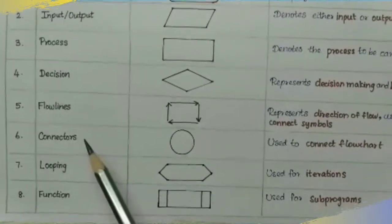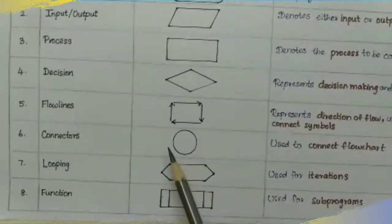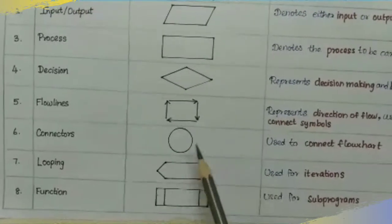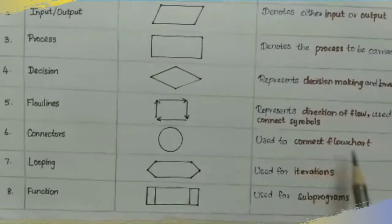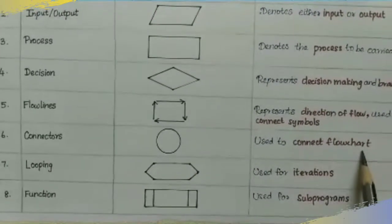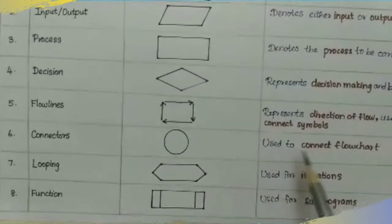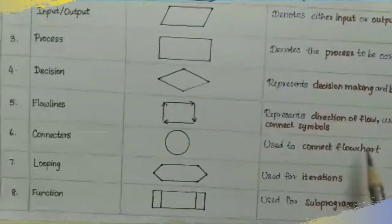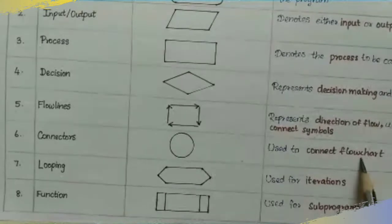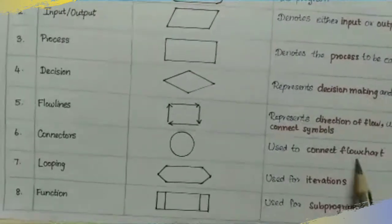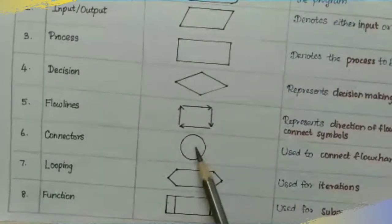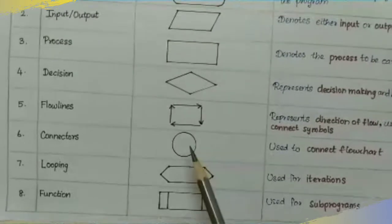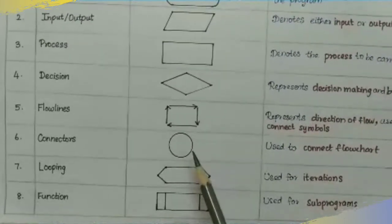Next are connectors. We use a circular shape for connectors. Connectors are used in the flow chart. We use connector symbols when connecting across pages — it is a must.